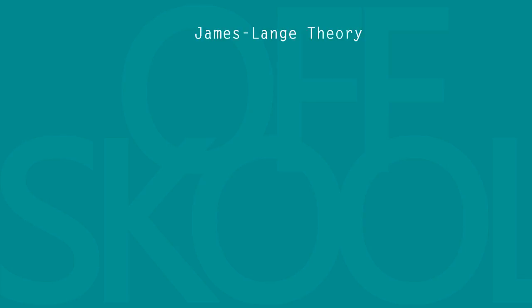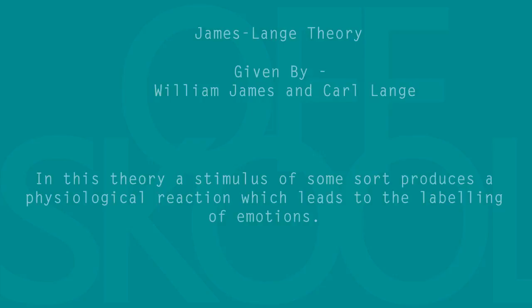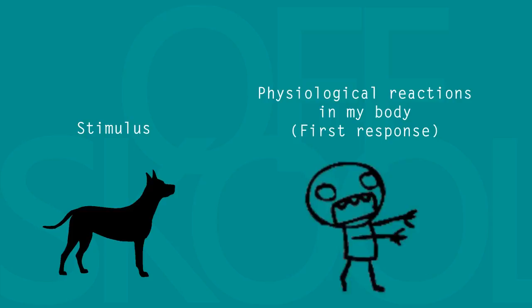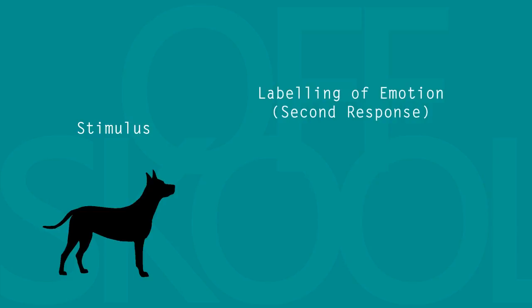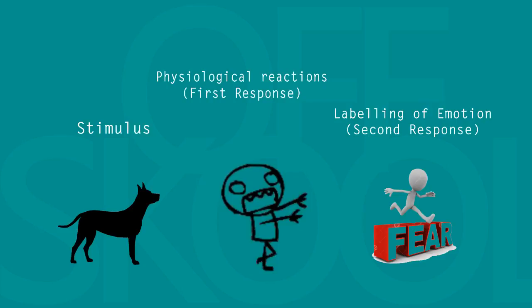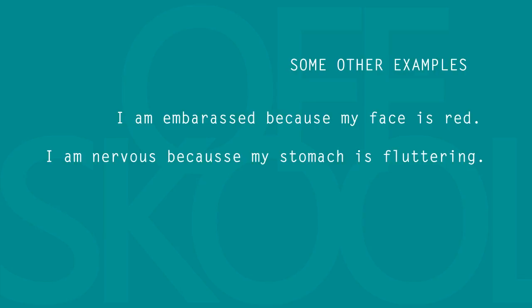James-Lange theory is one of the earliest theories of emotion, given by William James and Carl Lange. In this theory, a stimulus of some sort produces a physiological reaction which leads to the labeling of emotion. For example, when I encounter a large snarling dog, there are physiological reactions happening in my body first. So when the dog snarls at me, I start shaking or running, and then I realize and label the emotion — oh, I'm afraid. Simply put, I'm afraid because I was shaking or running. Some other examples: I'm embarrassed because my face is red, or I'm nervous because my stomach is fluttering.